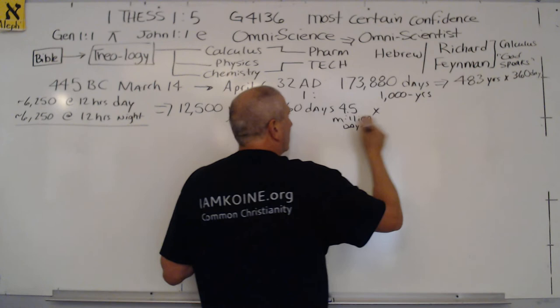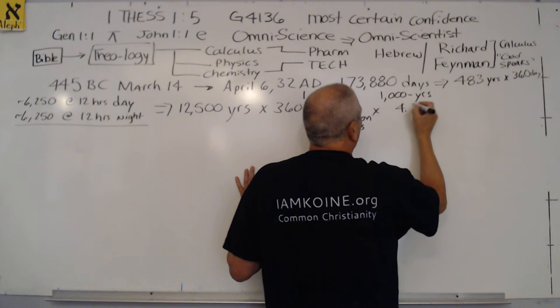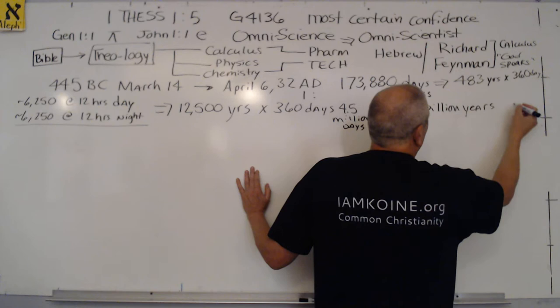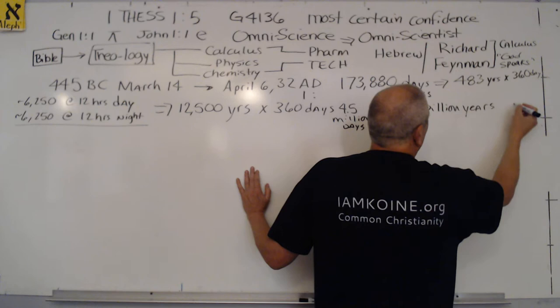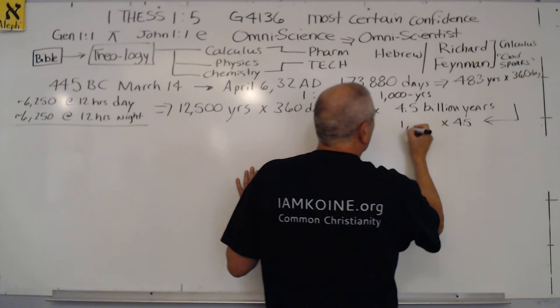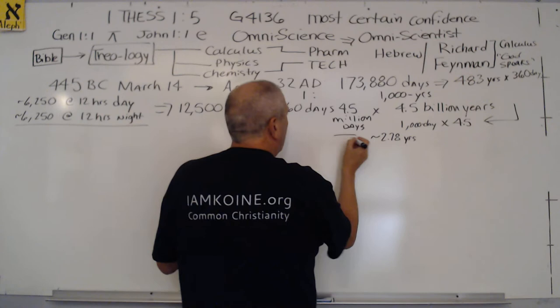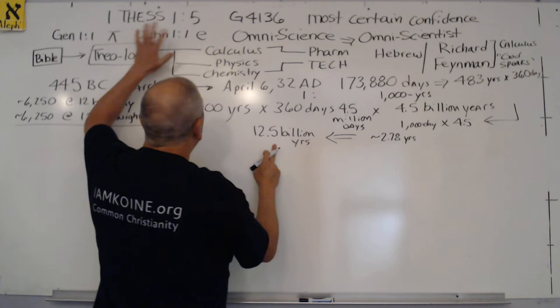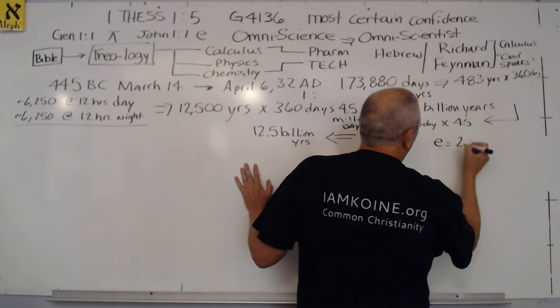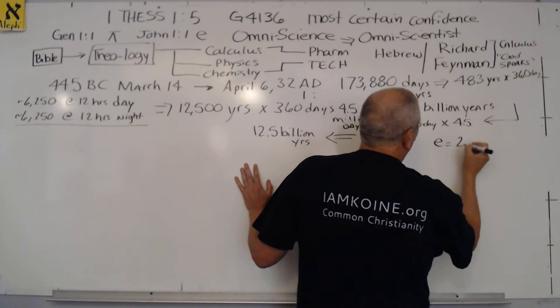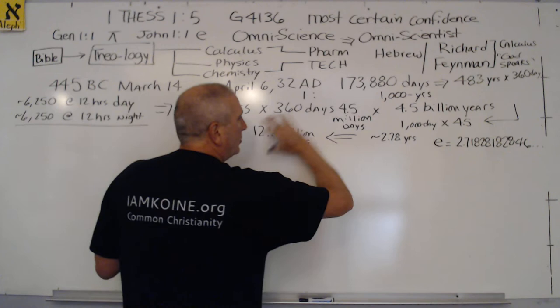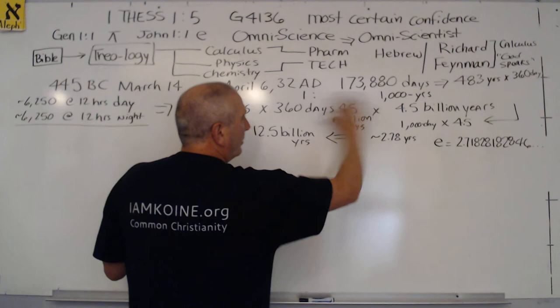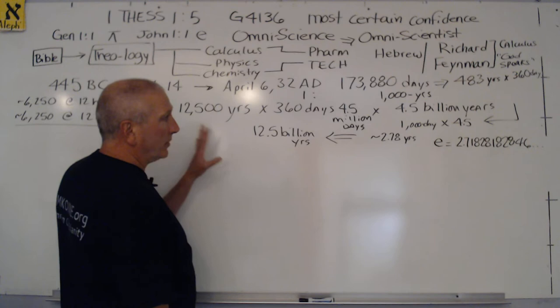We also had the approximate 6,250-year divine ratio developed by Dr. John Penn at 12 hours per day, and then the 6,250 years at 12 hours night, which gave the 12,500 chronological years times 360 days. You remember the ratios Dr. Penn taught us and reminded us, one day to 1,000 years is a ratio. The inverse relationship of division is multiplications. While we're multiplying 360 days, that gives us 4.5 million days. Multiply it by 1,000 years. Just change the unit of measure from days to years and add three zeros. We get 4.5 billion years. And as he said, go the opposite direction. Take the 4.5, multiply it by 1,000 days. And 1,000 days is approximately 2.78 years.